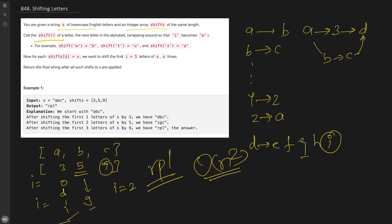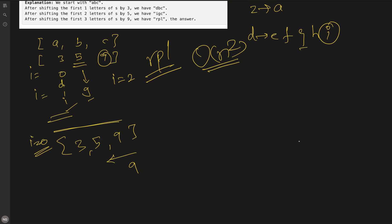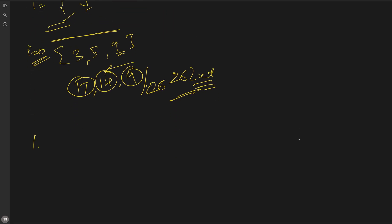If we sum the shift array from back to front — [9, 5, 3] — the prefix sum from back to front gives: 9, then 9+5=14, then 14+3=17. So in the end we need to update the first character by 17, the second by 14, and the third by 9. This number can be huge so we take modulo 26, as there are 26 lowercase English letters. The four steps are: first, create a prefix sum array from back to front.